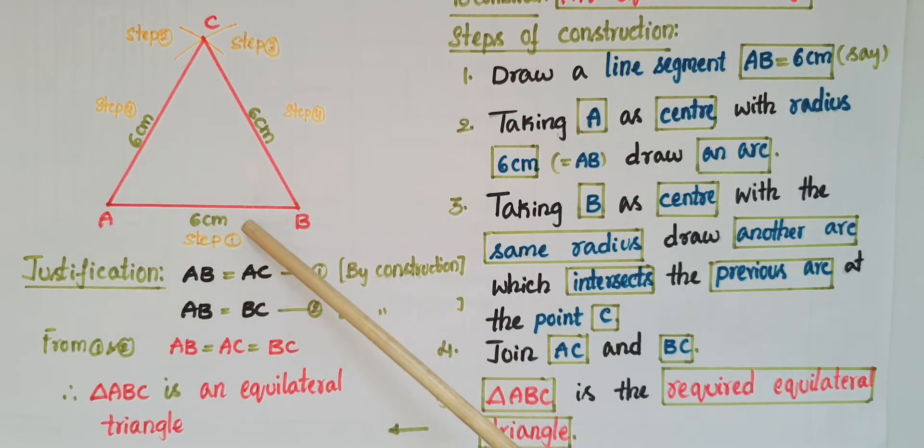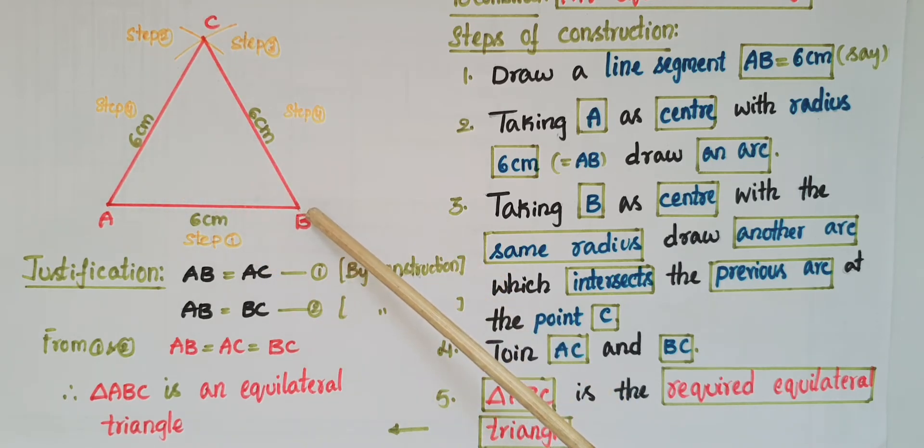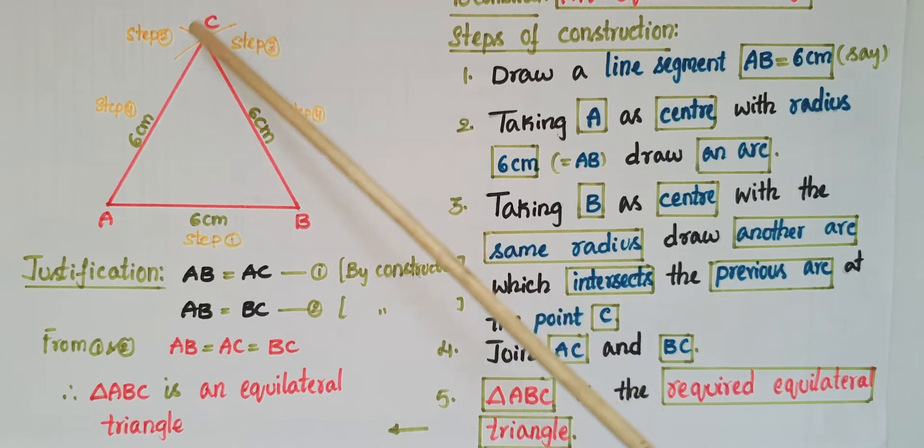Draw AB equal to 6 centimeters, we can assume any value here. Taking A as center, draw an arc with the same radius as AB, that is 6 centimeters. Next, taking B as center with the same radius, draw another arc which intersects the previous arc at the point C. Now join AC and BC.